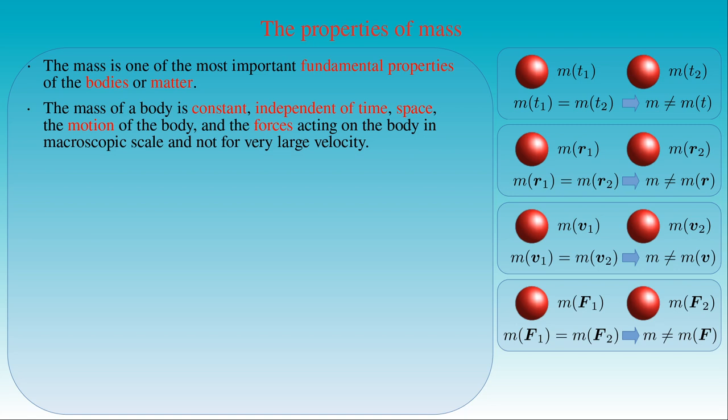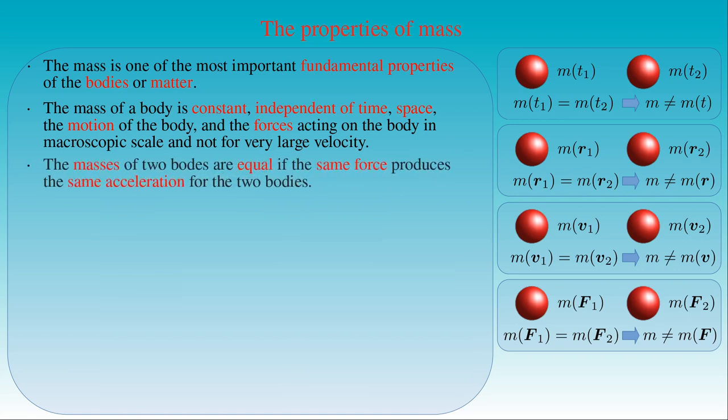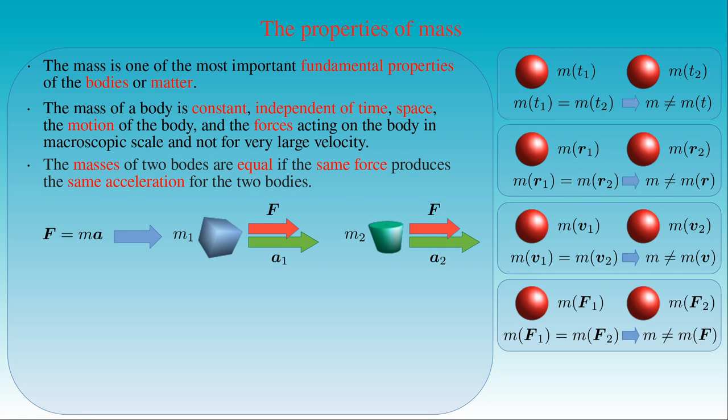We can also state that the masses of two bodies are equal if the same force produces the same acceleration for the two bodies. By virtue of the second law, if force F acts on bodies with masses M1 and M2, it produces accelerations A1 and A2. If A1 and A2 are the same, then M1 equals M2 — the bodies have the same mass. We can also demonstrate that bodies made of different materials, with different sizes, shapes, temperatures or colors, or bodies in different states of matter can have the same masses. At the same time, bodies made of the same material can still have different masses.